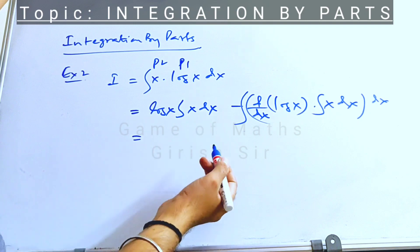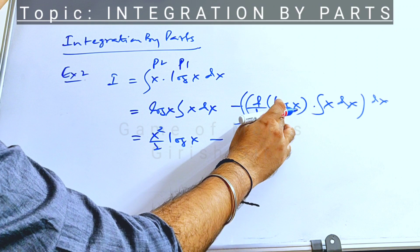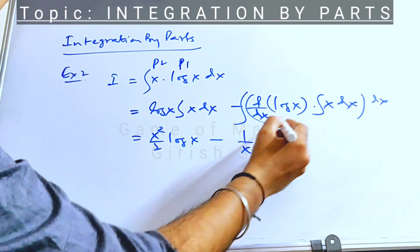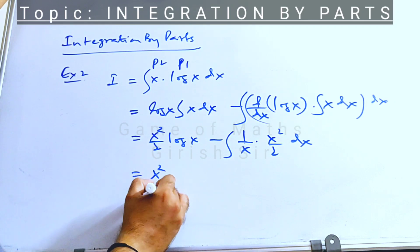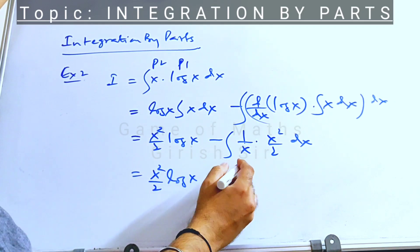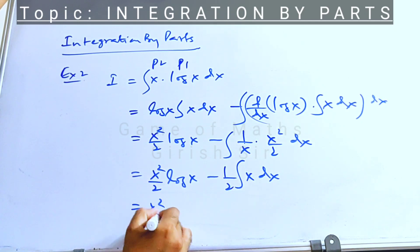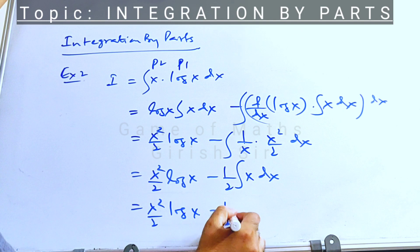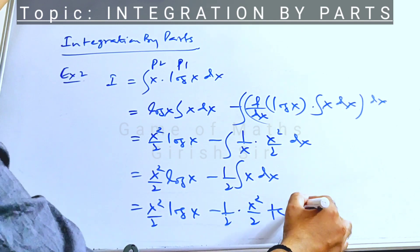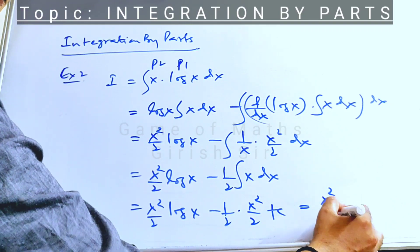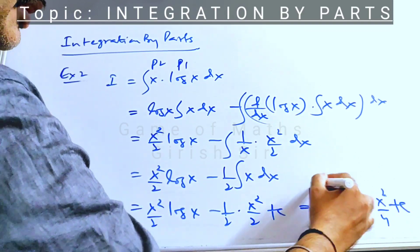The integral of x is x squared over 2. Differentiating log x gives 1 over x, and integrating x gives x squared over 2. The integral of x is x squared over 2, and simplifying further gives the final answer.